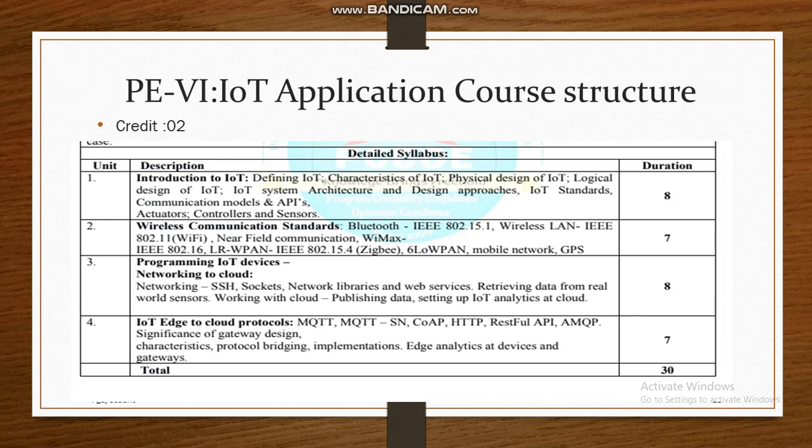About the course — IoT Applications Program Elective 6 covers the following content. Unit 1 is Introduction and Ecosystem. Unit 2 covers wireless communication standards including Bluetooth, Wi-Fi, WiMAX, ZigBee, and 6LoWPAN protocols. Unit 3 is about programming IoT devices specifically from networking to cloud, covering all components in that range.